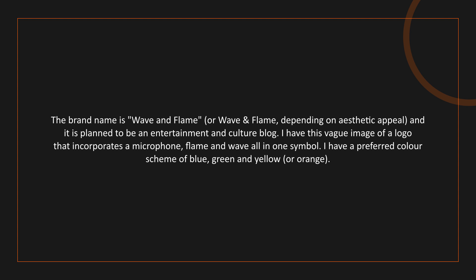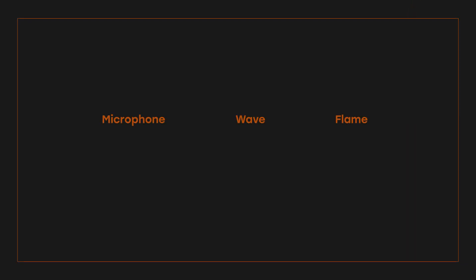Now we have to combine these three elements into one symbol. For the microphone we can either use the vectorized version of a simple microphone design or we can only use a microphone stand. For the wave, we can use elements like a water drop or actual water waves, and for the flame we can use elements like fire and fumes.